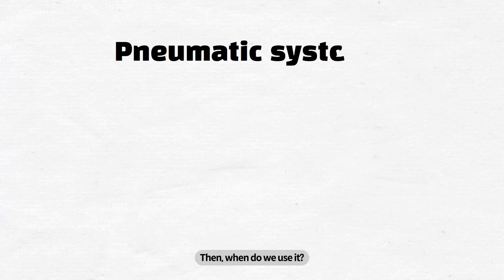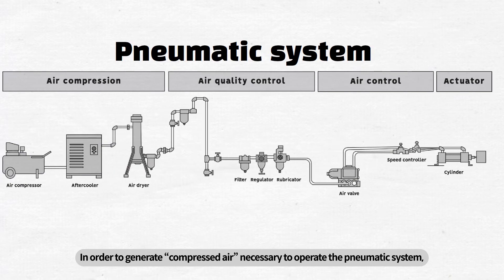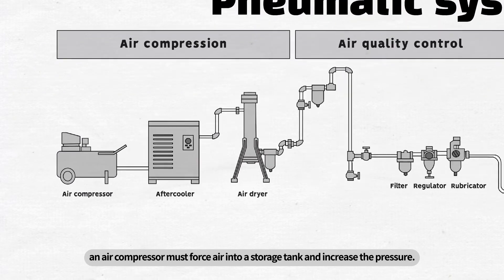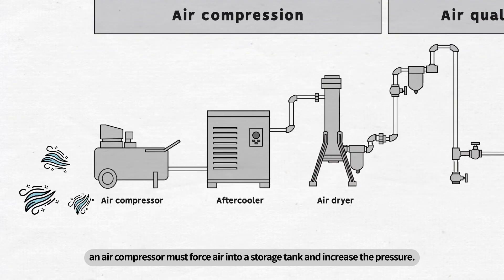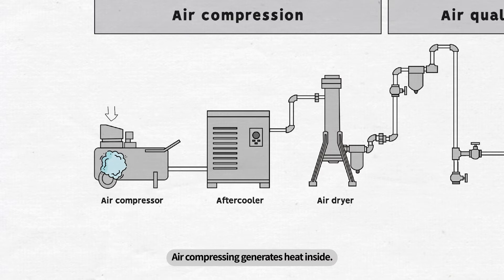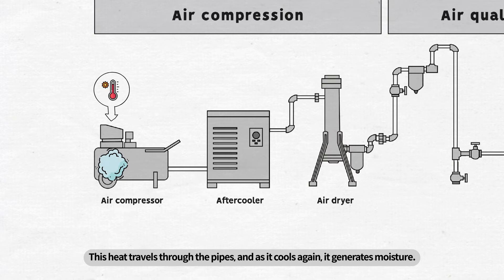When do we use it? In order to generate compressed air necessary to operate the pneumatic system, an air compressor must force air into a storage tank and increase the pressure. Air compressing generates heat inside. This heat travels through the pipes, and as it cools again, it generates moisture.